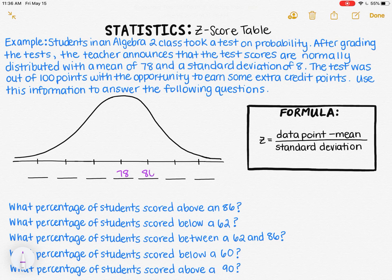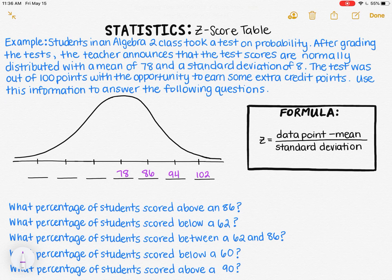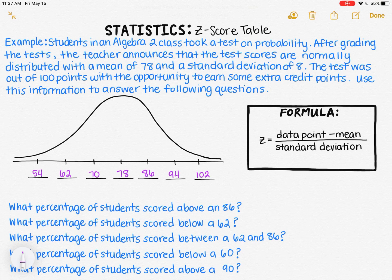78 plus 8 gives me 86, which is one standard deviation above the mean. 86 plus 8 gives me 94, which is two standard deviations above the mean. And 94 plus 8 gives me 102, which is three standard deviations above the mean. Now subtracting 8 to label the tick marks to the left: 78 minus 8 gives me 70, one standard deviation below the mean. 70 minus 8 gives me 62, two standard deviations below the mean. And 62 minus 8 gives me 54, three standard deviations below the mean.